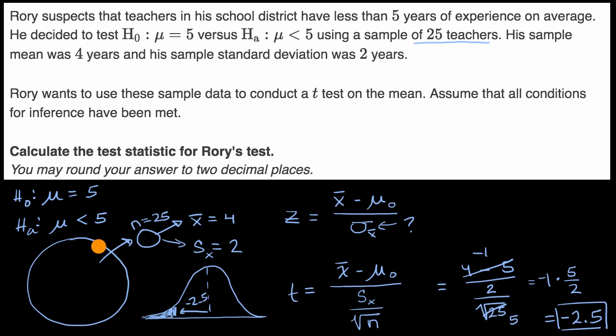Now another really important thing to keep in mind is, they told us to assume all conditions for inference have been met. That's assuming this was truly a random sample, that the individual observations are either truly independent or roughly independent, that maybe he observed either with replacement or it's less than 10% of the population, and he feels good that the sampling distribution is going to be roughly normal. And we've talked about that in other videos.